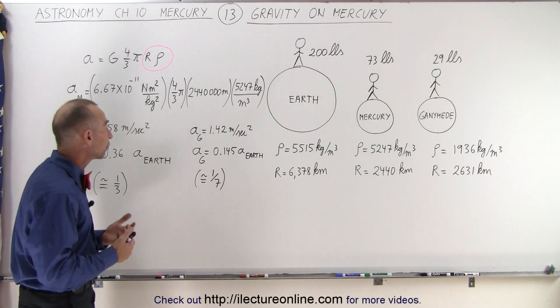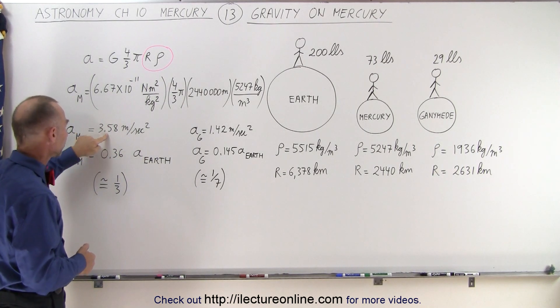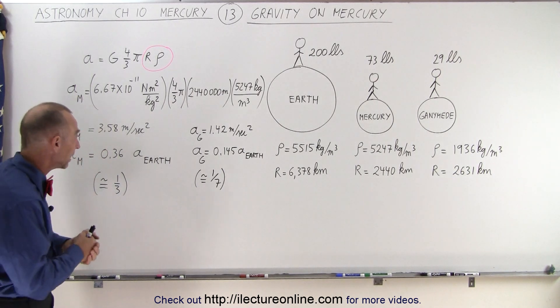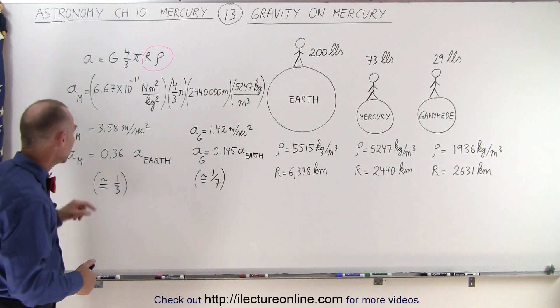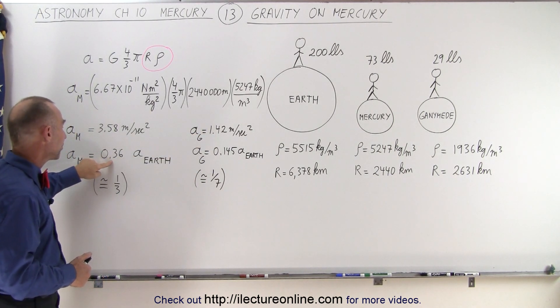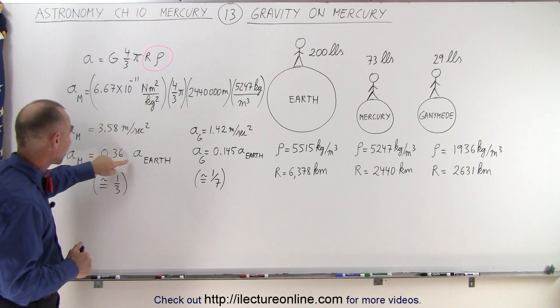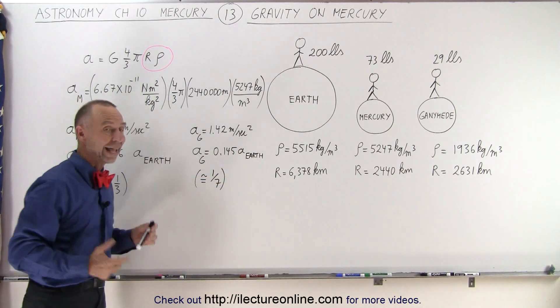But then when we calculate the gravitational force, notice the acceleration on Mercury is 3.58 meters per second squared compared to about 9.8 on the Earth. And for Ganymede, it's only 1.42 meters per second squared. Which means compared to the Earth, it's about 36 percent the gravitational force of Mercury versus the gravitational force on the Earth. And for Ganymede, it's only about 14 and a half percent.